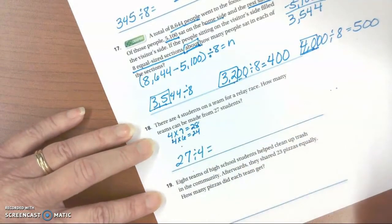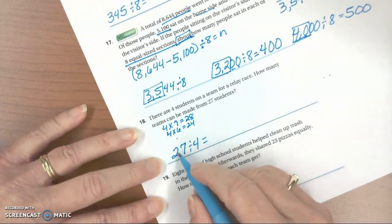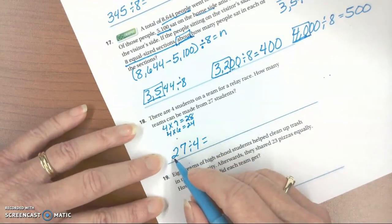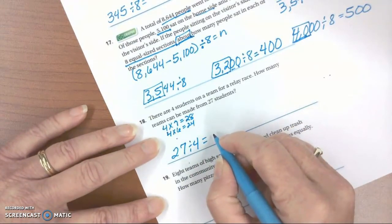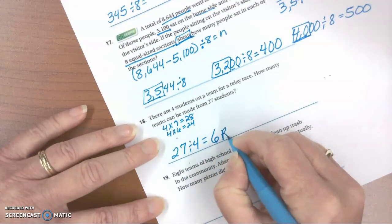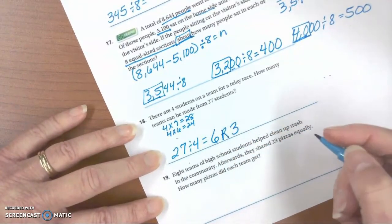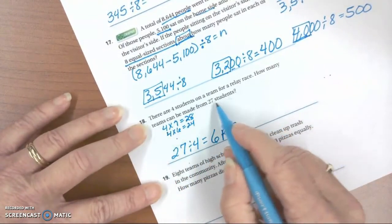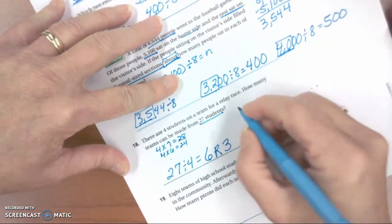But it doesn't tell us to estimate. We're actually looking for a correct answer. When we look at that problem, 24 divided by 4 is 6, with 27 we have 6 remainder of 3. But let's look at the context of the problem. How many teams can be made from 27 students? So we're going to explain our answer.